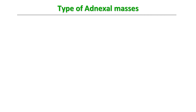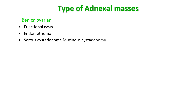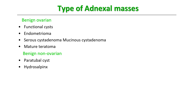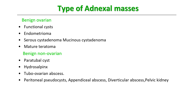Looking at the differential diagnosis of adnexal masses: benign ovarian cysts could be functional cysts, endometrioma or chocolate cyst, serous cystadenoma, mucinous cystadenoma, or mature teratoma. Benign non-ovarian cysts could be a paratubal cyst, hydrosalpinx, a dilated fallopian tube, or pyosalpinx, tubo-ovarian abscess, peritoneal pseudocyst, appendiceal abscess, diverticular abscess, or pelvic kidney.